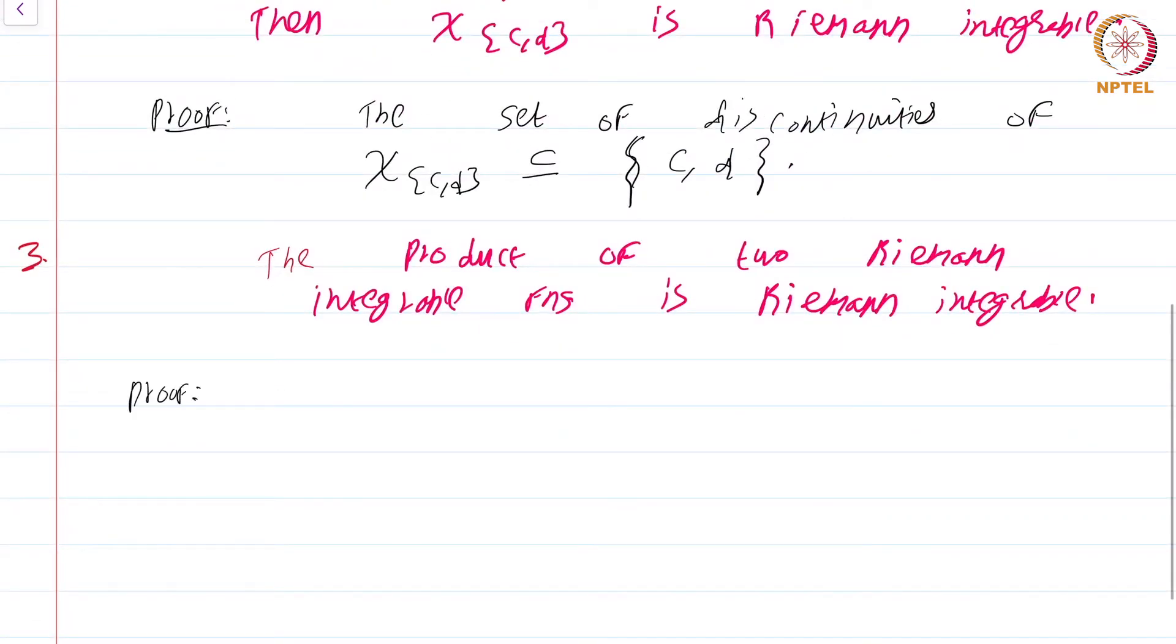Of course I must write where these functions are defined: f from [a,b] to R and g is also from [a,b] to R. Proof: Obviously, f times g is bounded.